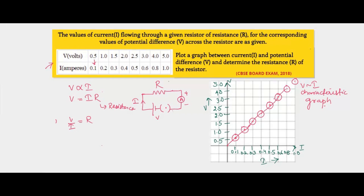Now if we join these points, we see that the line comes out to be a straight line. This straight line gives us the resistance of the resistor. This line is always a straight line for ohmic conductors — conductors which obey Ohm's Law — meaning if we increase the potential difference, there is a corresponding increase in current, and vice versa.